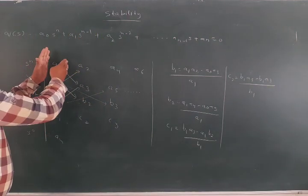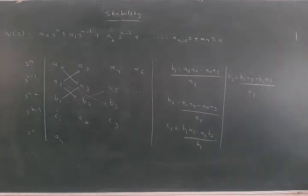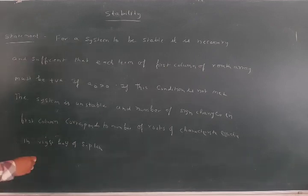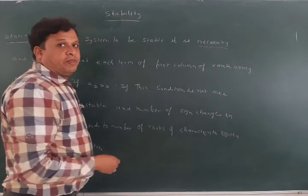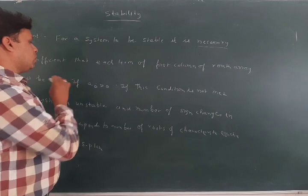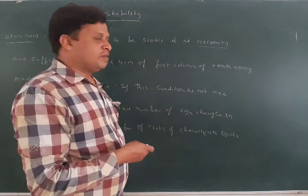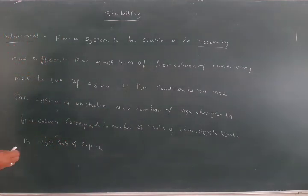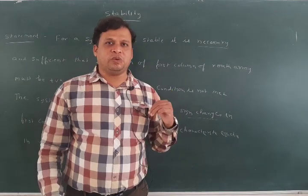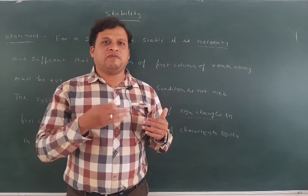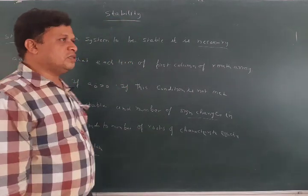For a system to be stable, it is necessary and sufficient that the first column of the Routh array must be all positive. If this condition is not met, the system is unstable. The number of sign changes in the first column equals the number of roots in the right half of the s-plane. If all are positive, the roots lie in the left half of the s-plane — a stable system. If there are sign changes, roots are in the right half — an unstable system.